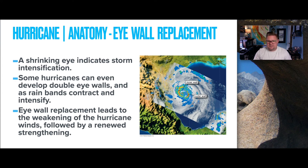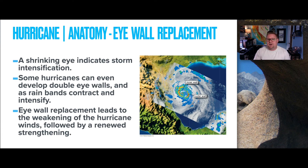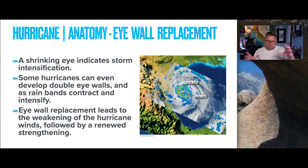Eye wall replacement is an interesting topic. A shrinking eye indicates the storm's intensification. Some hurricanes develop a double eye wall — as rain bands contract, the storm continues to intensify. The eye wall replacement leads to a weakening of hurricane winds, followed by renewed strengthening. The inner wall and developing outer wall eventually merge, resulting in faster spinning vorticity.